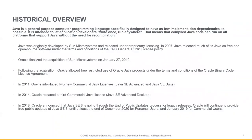Java is a commercial programming language specifically designed to have as few implementation dependencies as possible. By design, it allows developers to write once and run everywhere. Java was initially developed by Sun Microsystems under a proprietary license until 2007, when it was released as free and open source software under the GNU General Public License.